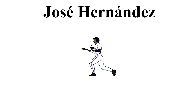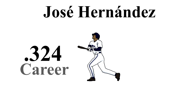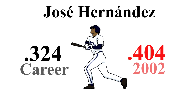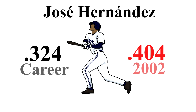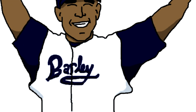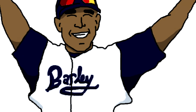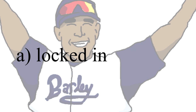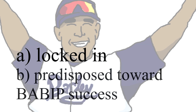Consider the case of Mr. Jose Hernandez. He had a career BABIP of 324, but in the 2002 season he had an astounding 404 BABIP. Was he lucky? Was he locked in? Was he special? A little bit of all those things. Mr. Hernandez could not have had a 400 BABIP without making solid contact, so he was locked in to a degree. And his career BABIP was above 300, so he had a skill floor, but at the same time he would not have been able to beat his already high career BABIP without some astounding luck.